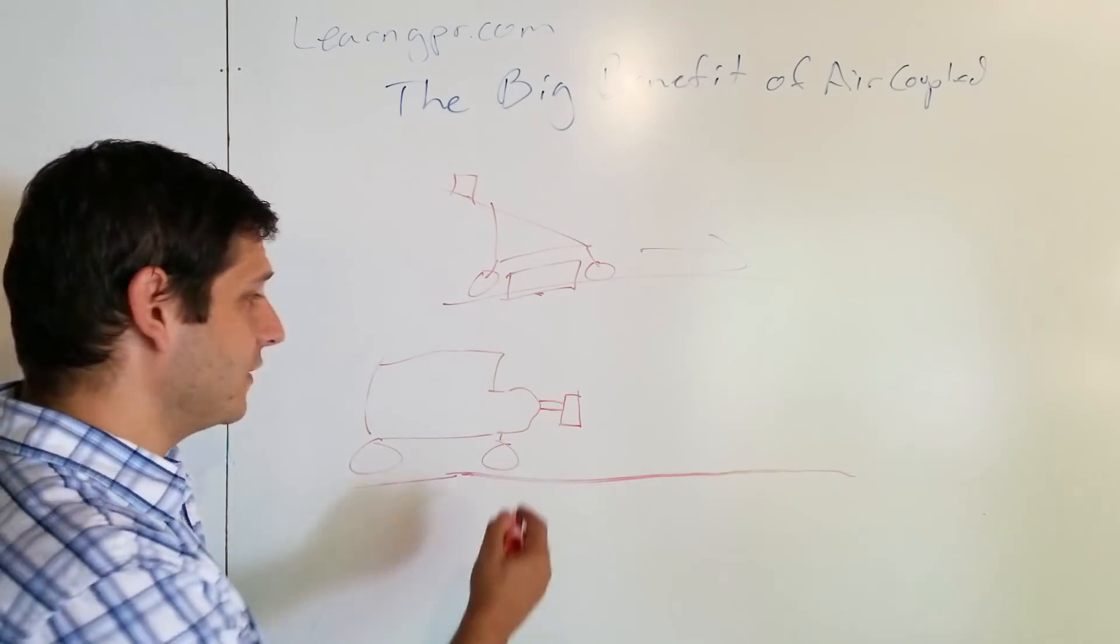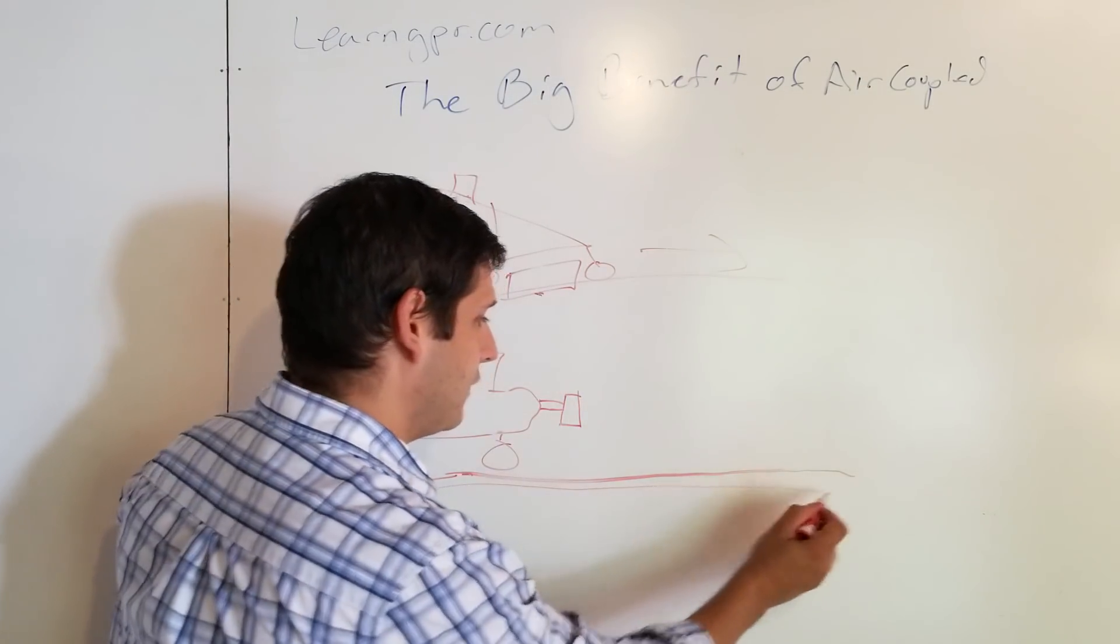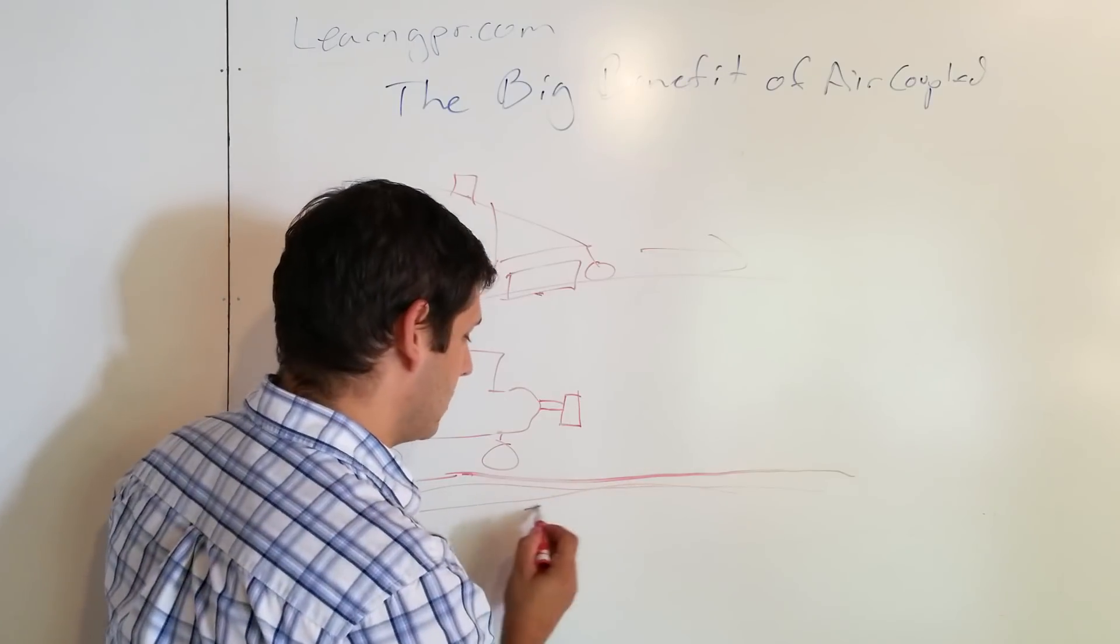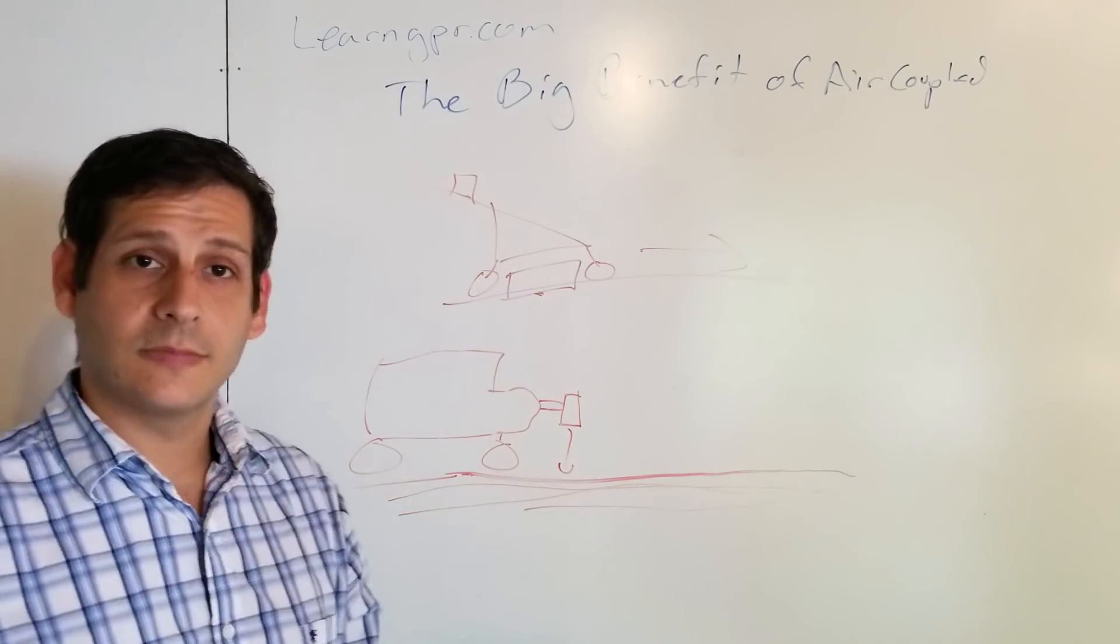So what's the big benefit then of having an air couple versus a ground couple here? If you're trying to look at these really thin layers in the ground surface, what's the big benefit here?